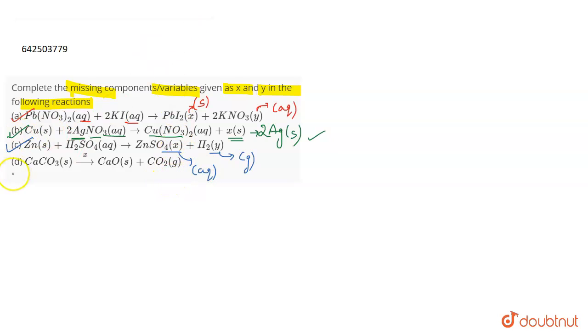Talking about the last one which is the D part, it says that CaCO3 solid gives CaO solid plus CO2 in the presence of X. So this will be heating. When you heat the calcium carbonate solution which is represented by the triangle sign which represents heating, it gives out calcium oxide and carbon dioxide gas. So that's all for the question.